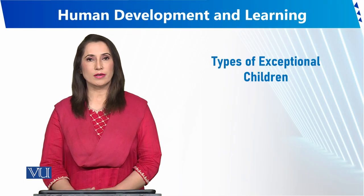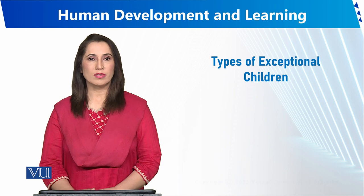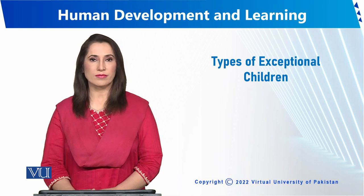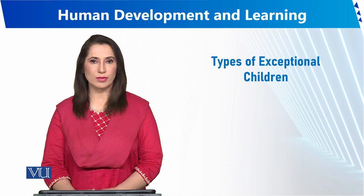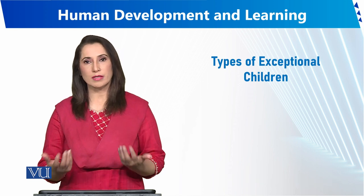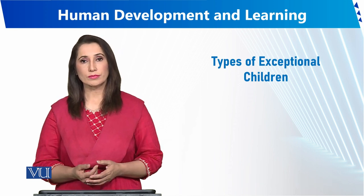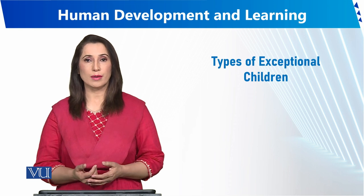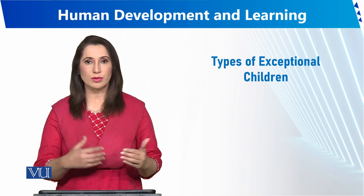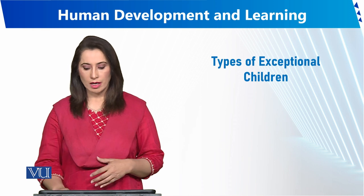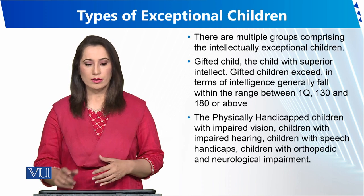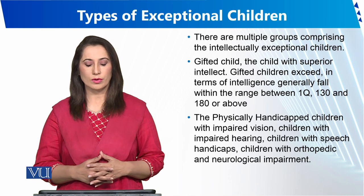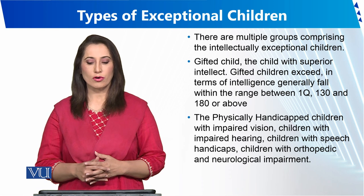Types of exceptional children: exceptional children are different children. They have some exception of intelligence, some exception of attitude, some exception of aptitude, and some exception of handicappedness. So exception can be positive and exception can be negative. What are the major types?